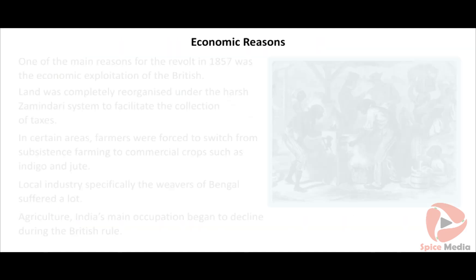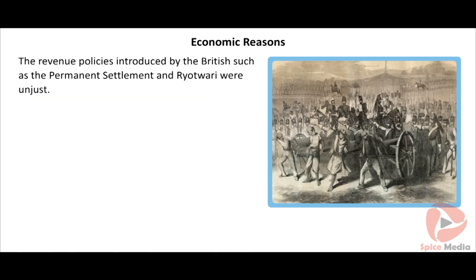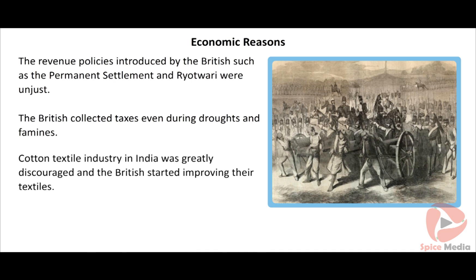One of the main reasons for the revolt in 1857 was the economic exploitation by the British. The revenue policies of the British, such as the Permanent Settlement and Ryotwari, brought large-scale discontentment. Taxes were collected even during famines and droughts, whereas in earlier times native rajas had waived taxes during such periods.